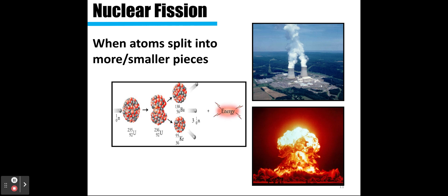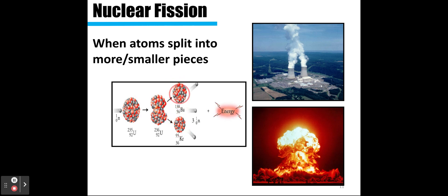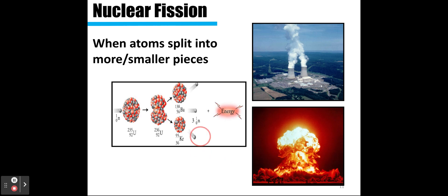Nuclear fission is when an atom splits into smaller atoms or pieces. Here you have a neutron bombarding a uranium-238 nucleus, making it unstable. The nucleus splits apart into two smaller parts — a barium nucleus and a krypton nucleus — along with three neutrons that are produced plus some energy. This is the kind of reaction that occurs in nuclear reactors or nuclear bombs.